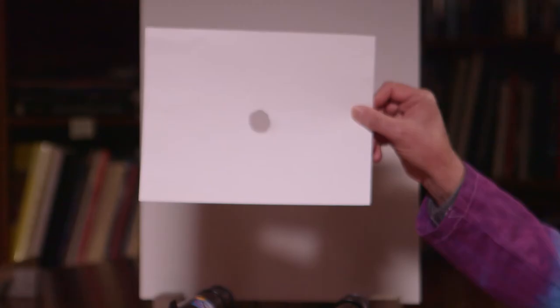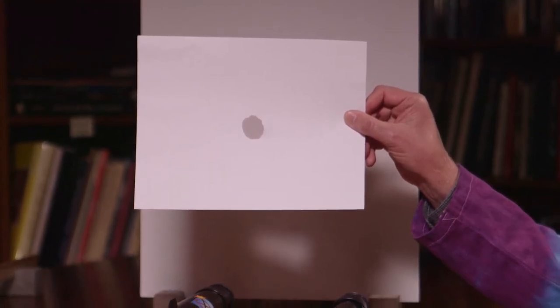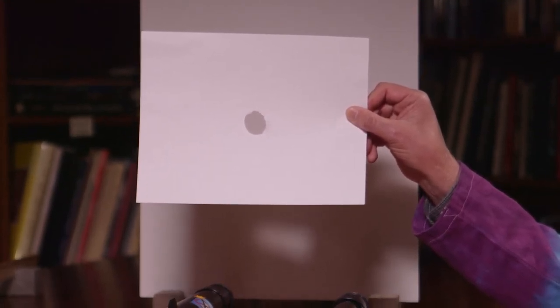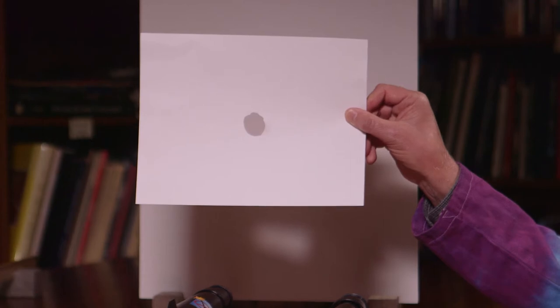In the video on pinholes, you discovered that when you put a small hole in a piece of paper you can project an image of a distant light source on a screen. At the very end, you discovered that when the pinhole gets very large, the image becomes very fuzzy, however it's very bright as well.